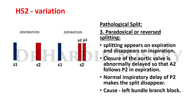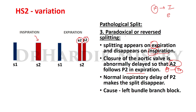The third type is paradoxical or reverse splitting: splitting appears on expiration and disappears on inspiration — the opposite of normal. This is because closure of the aortic valve is abnormally delayed, so A2 follows P2 during expiration. During inspiration, the normal inspiratory delay of P2 makes the split disappear. The cause of paradoxical or reverse splitting is left bundle branch block.